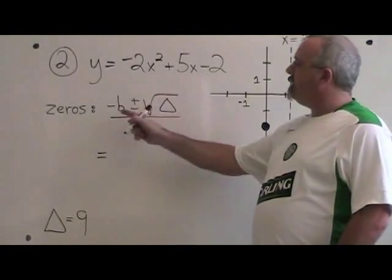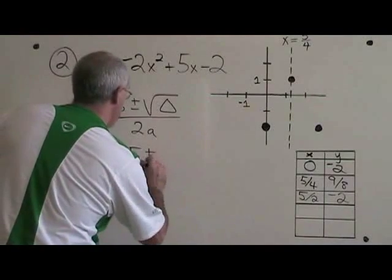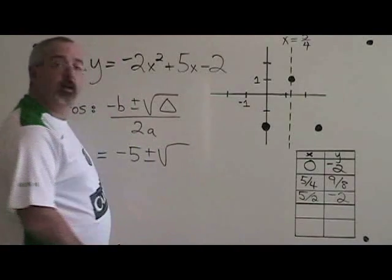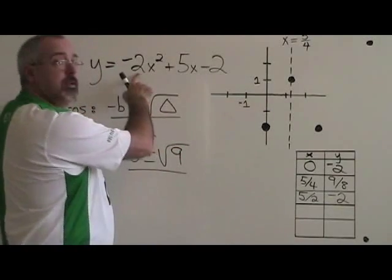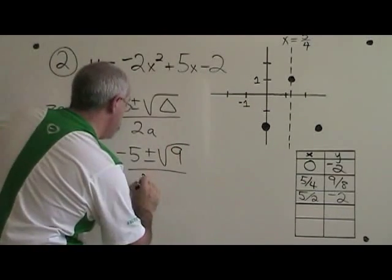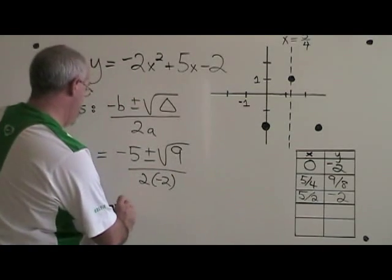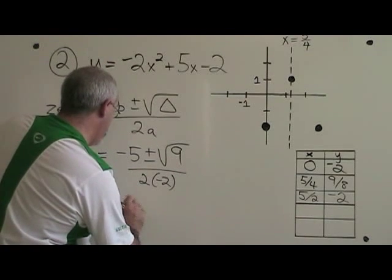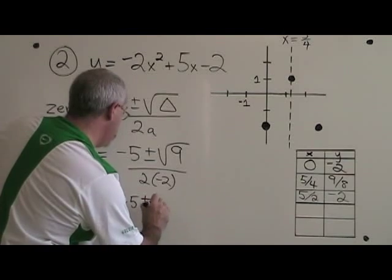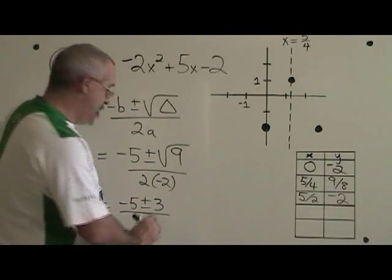Let's fill it in. Our b is 5, so negative b is negative 5. Our delta is 9. A is negative 2, so 2a is 2 times negative 2. The square root of 9 is 3, so we have negative 5 plus or minus 3 as our numerator. And 2 times negative 2 is negative 4.